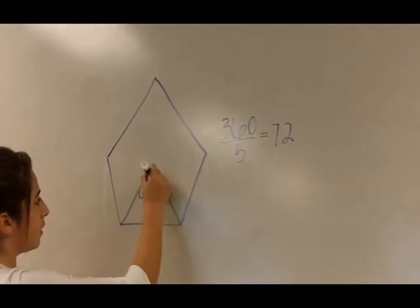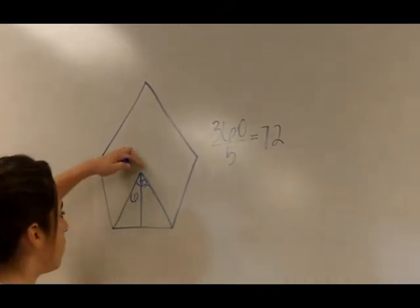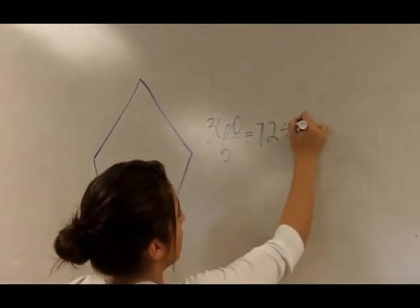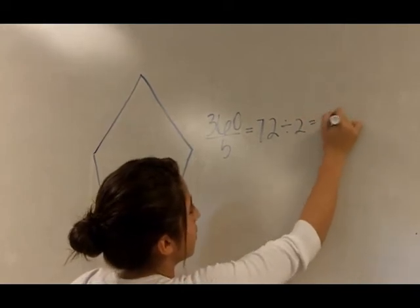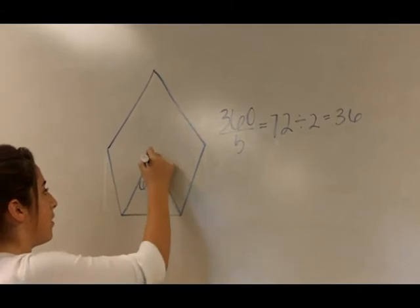So this is 72, and then you have to find the right one, so by 2, and then 36.